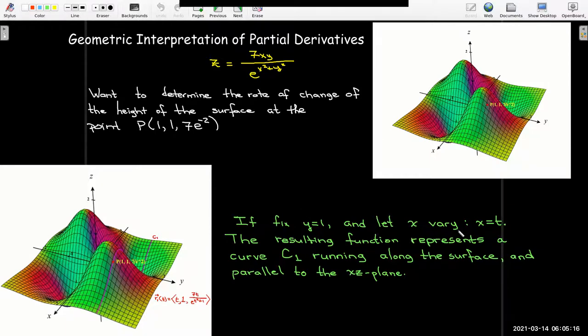And so if we just say, let's use a parameter for x, x will be the parameter t any value t, the resulting function is going to give us a curve, this magenta curve, which runs along the surface, on top of the surface, and is parallel to the xz plane.